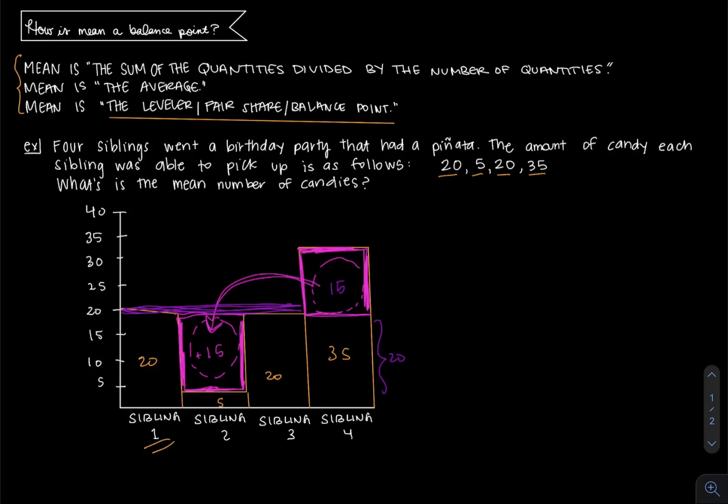So the mean number of candies is 20 pieces. That balance point, so that everybody has the fair amount, is 20 pieces. The only calculation we did was some addition going on to break up the amount. We didn't go through and add up all four values and then divide by the total number of values.